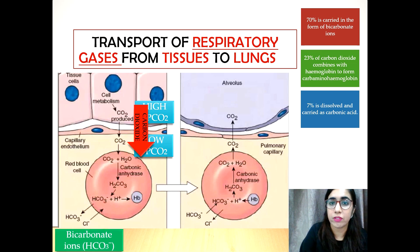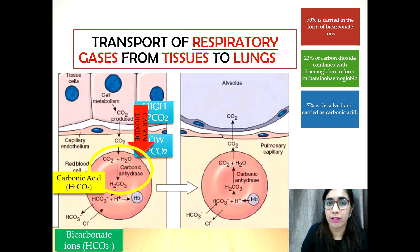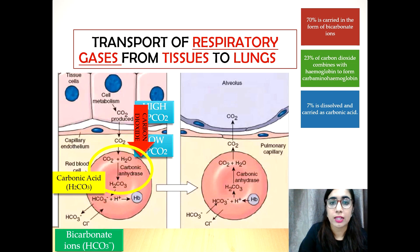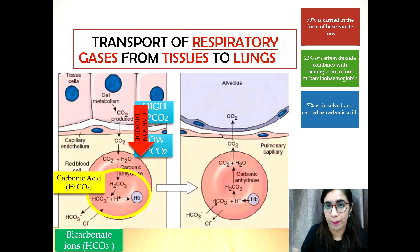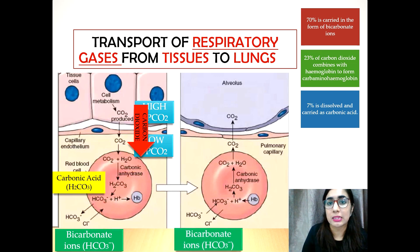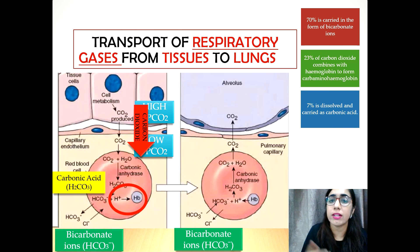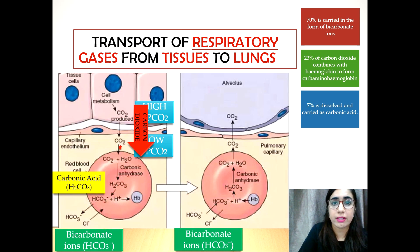Carbon dioxide diffuses from the cell bodies into the blood capillaries and then into the red blood cells. Inside the red blood cells, the enzyme carbonic anhydrase catalyses the conversion of carbon dioxide and water into carbonic acid (H₂CO₃). The carbonic acid then breaks down into hydrogen ions and bicarbonate ions. The bicarbonate ions diffuse from the red blood cell into the plasma and are transported to the lungs via blood circulation. The hydrogen ions bind with hemoglobin to prevent the blood from becoming acidic.